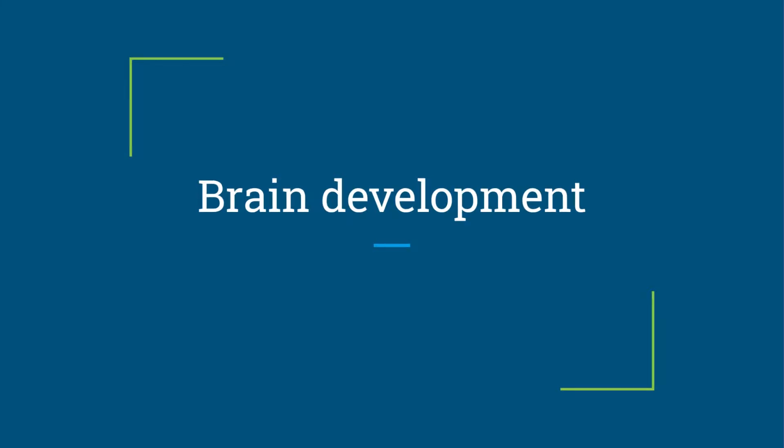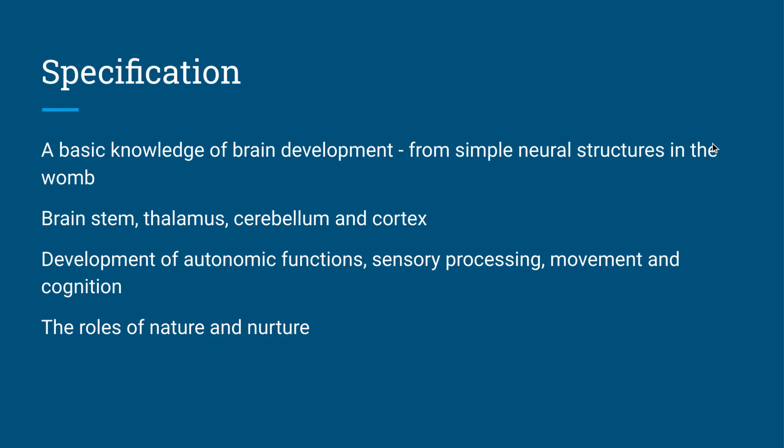This first video is going to look at brain development. On your specification, it says you need to know a basic knowledge of brain development from simple neural structures in the womb. We need to know certain parts of the brain: brainstem, thalamus, cerebellum, and cortex and what they do, and also the development of autonomic functions, sensory processing, how we learn movement and cognition. It sounds like a lot of long words there, but it will become clearer as we go through the video. We've also got to know the different roles of nature and nurture.